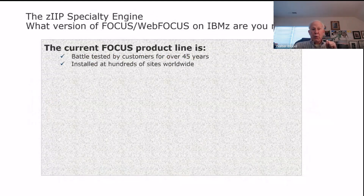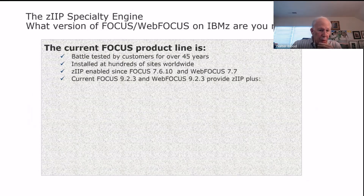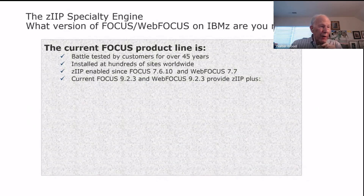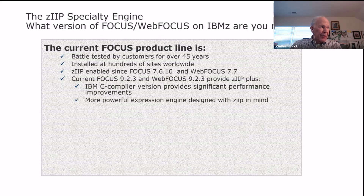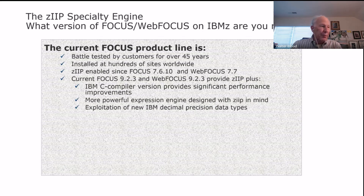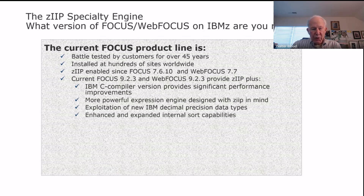The current Focus product line has been battle-tested with our customers for over 45 years and is installed at hundreds of sites around the world. ZIP has been enabled in Focus since Focus 7.6 and WebFocus 7.7. The current 9.2.3 releases on both Focus and WebFocus provide full ZIP enablement. In addition, IBM C compiler changes provide significant performance improvements. There is a more powerful expression engine designed specifically with ZIP in mind, exploiting new IBM functionality including decimal precision data types and pervasive encryption. We've also enhanced our internal sort capabilities, specifically for distinct and the sort verb across.